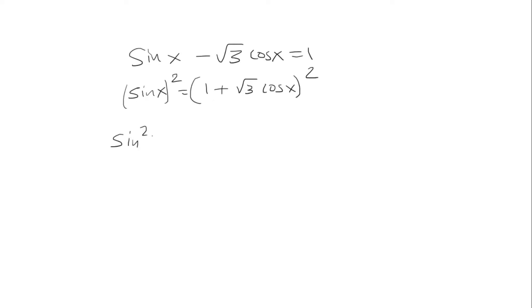So then I have sine squared is equal to 1 plus 2 root 3 cosine x plus 3 cosine squared. And now notice on the right you have 2 cosines and then on the left you have sine squared.